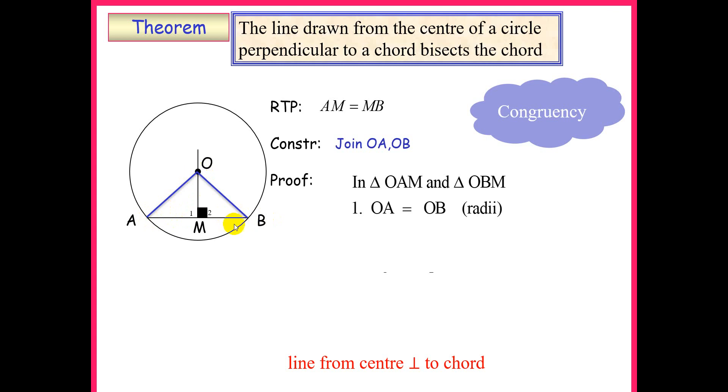So number one, we have OA equal to OB because of radii. Remember O is a center, so we have a radius OA and OB.